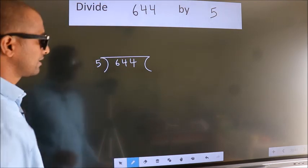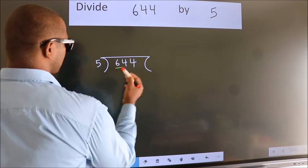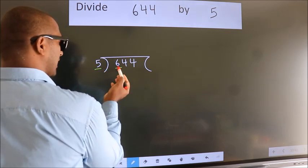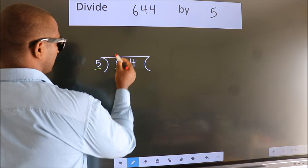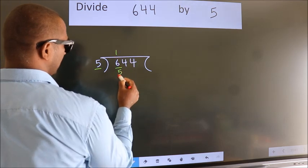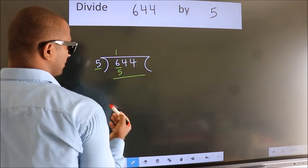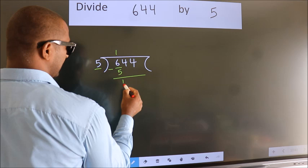Next. Here we have 6, here 5. A number close to 6 in 5 table is 5 once 5. Now we should subtract. We get 1.